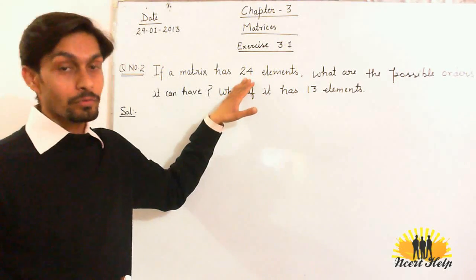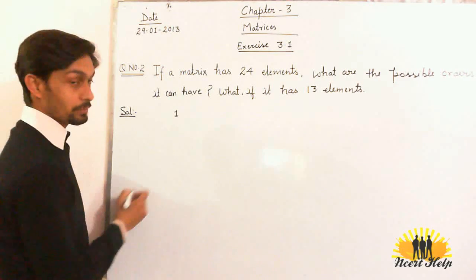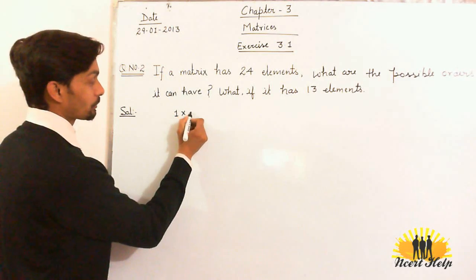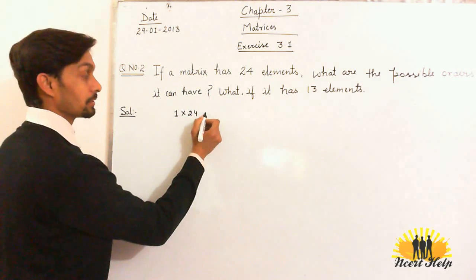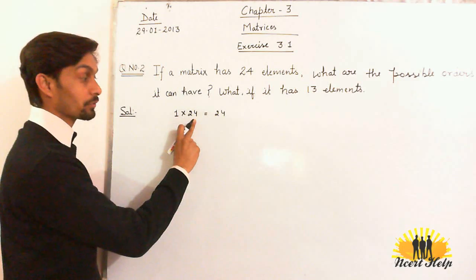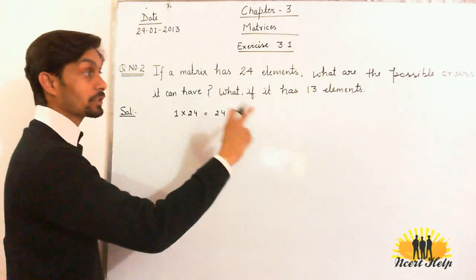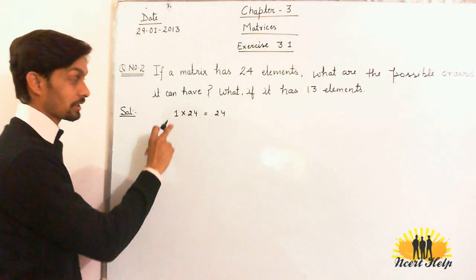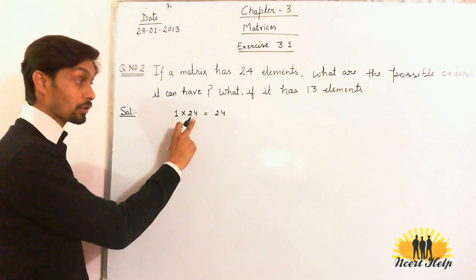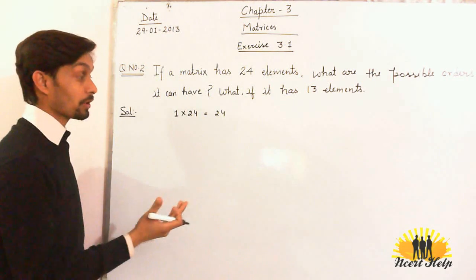What are the factors of 24? Maybe there is 1 row and 24 columns. If you multiply 1 by 24, you get 24 elements. So if there is 1 row and 24 columns, we will have 24 elements as in the question. What's the possible order?